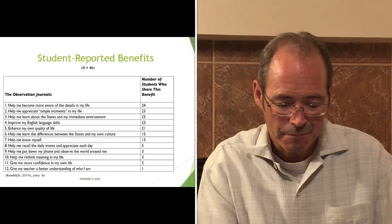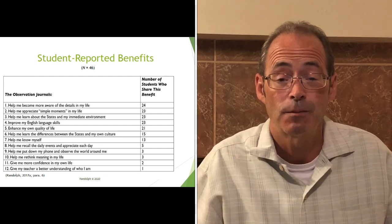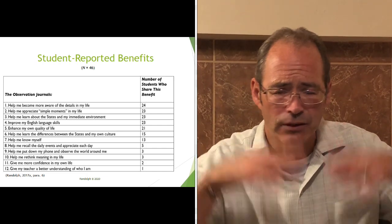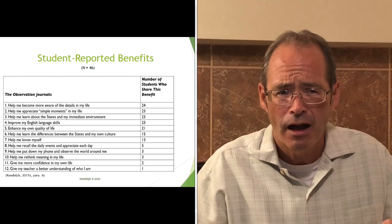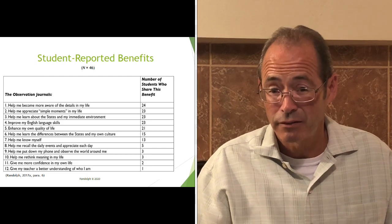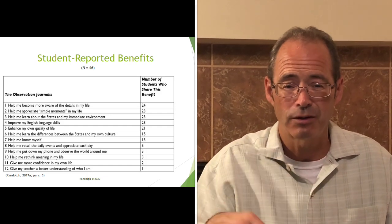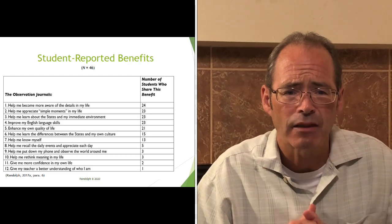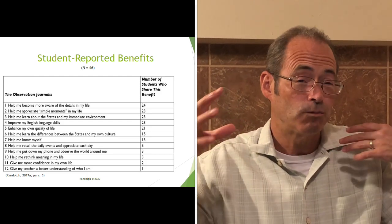Moving right along — student-reported benefits. What I did after the first semester, once grades were in and everything was done, I gave students a survey. They knew that saying great things wouldn't raise their grade and saying negative things wouldn't lower it. I asked them — it wasn't really a survey, more open-ended — to pick one or two things they felt the observation journals helped them with. It was almost an observation or reflection on the observation journals. I had a total of 46 students from three classes, and interestingly they wrote a lot of similar things. I ended up with about 12 categories.